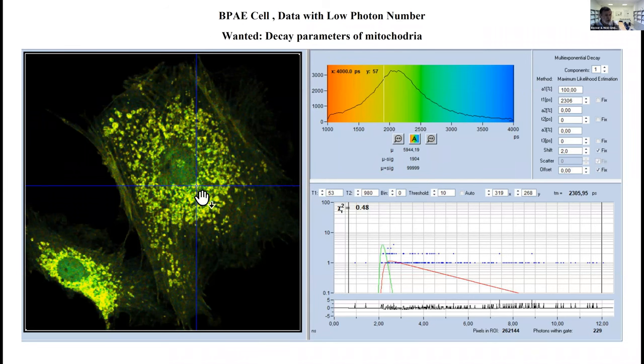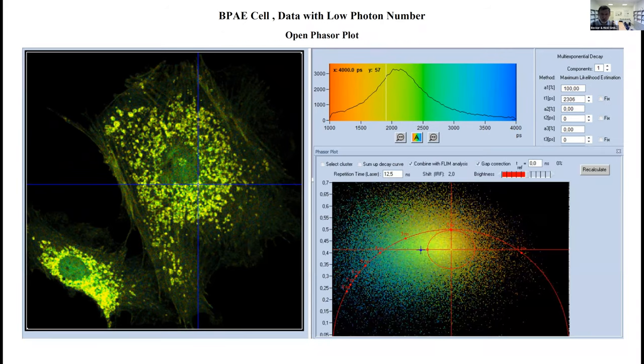How can we use it? Here's an image of a cell. Let's assume we're interested in the fluorescence decay of the mitochondria, but our photon number in the individual pixels is terribly low. What can we do? Load the data in the phasor plot. Select an area in the phasor plot which approximately corresponds to the color, that means the decay time, of the mitochondria in the time domain image.